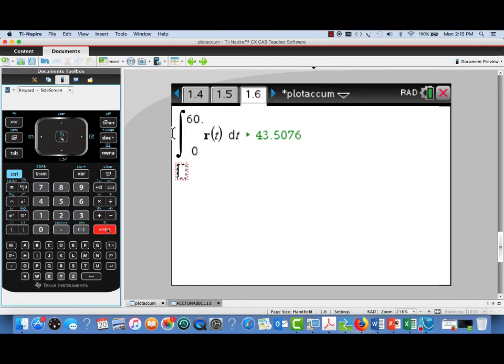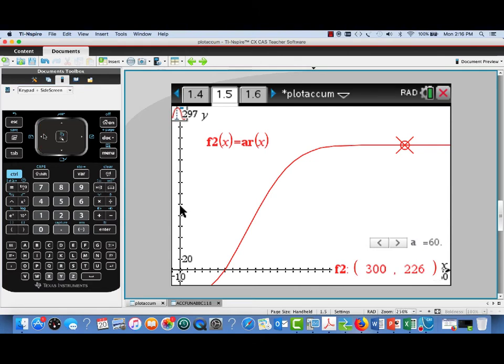Okay. Now, in our free response question, we were also asked to find the total number of people in the line, given that there were, at the beginning, 20 people in line, and people were also leaving the line at a constant rate of 0.7 people per second.